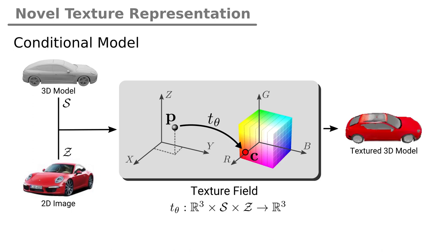For reconstructing texture, we conditioned the texture field on a global shape embedding, as well as a global feature embedding of a condition, for example a single image. The texture field learns to predict the color value following the provided conditions.